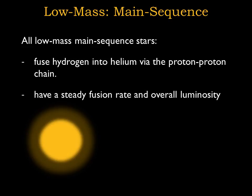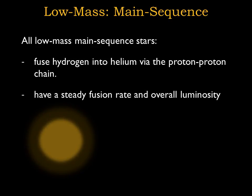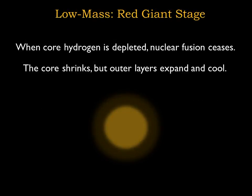The sun slowly and steadily fuses hydrogen into helium via the proton-proton chain. Gravitational equilibrium and energy balance work together to keep the sun's fusion rate and overall luminosity quite steady — this is the case for all low mass main sequence stars. A star like our sun will happily fuse hydrogen into helium for about 10 billion years, but once its hydrogen is finally depleted, nuclear fusion will cease. With no fusion to supply thermal energy and maintain the interior pressure, the core will be unable to resist the crush of gravity and will shrink.